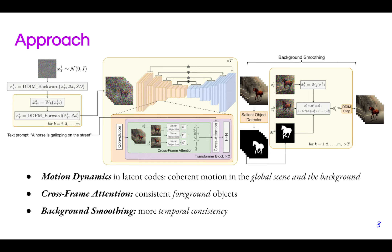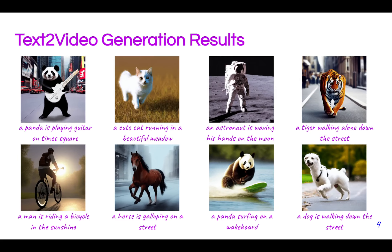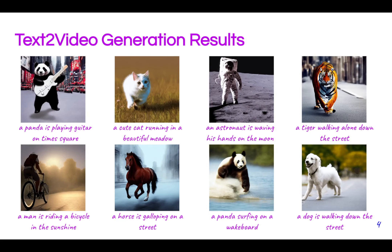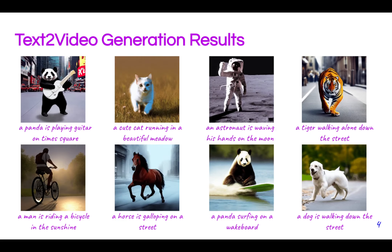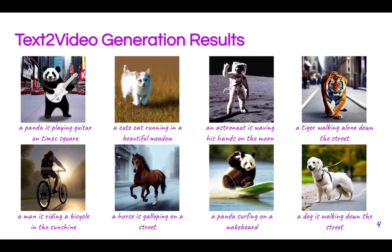And finally, at the end we perform background smoothing which gives even more temporal consistency between the generated frames. For this we incorporate a salient object detector and apply a background warping on the first frame's latent code, then blend with the current frame. Here we can see a couple of examples, like a running cat or a panda surfing on a wakeboard.